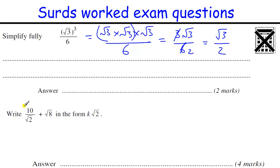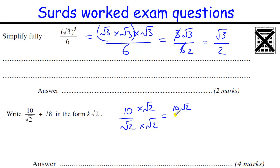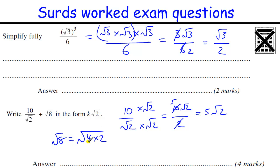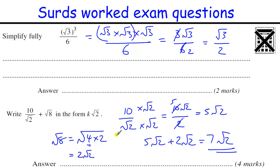Another one where we've got to combine terms. We've got 10 over root 2 — this is why we rationalise denominators, to be able to combine these. Times the top and bottom by root 2: we get 10 root 2 over 2. 10 divided by 2 is 5, so that's 5 root 2. And root 8 equals root 4 times 2, giving 2 root 2. So 5 root 2 plus 2 root 2 is 7 root 2, for 4 marks.